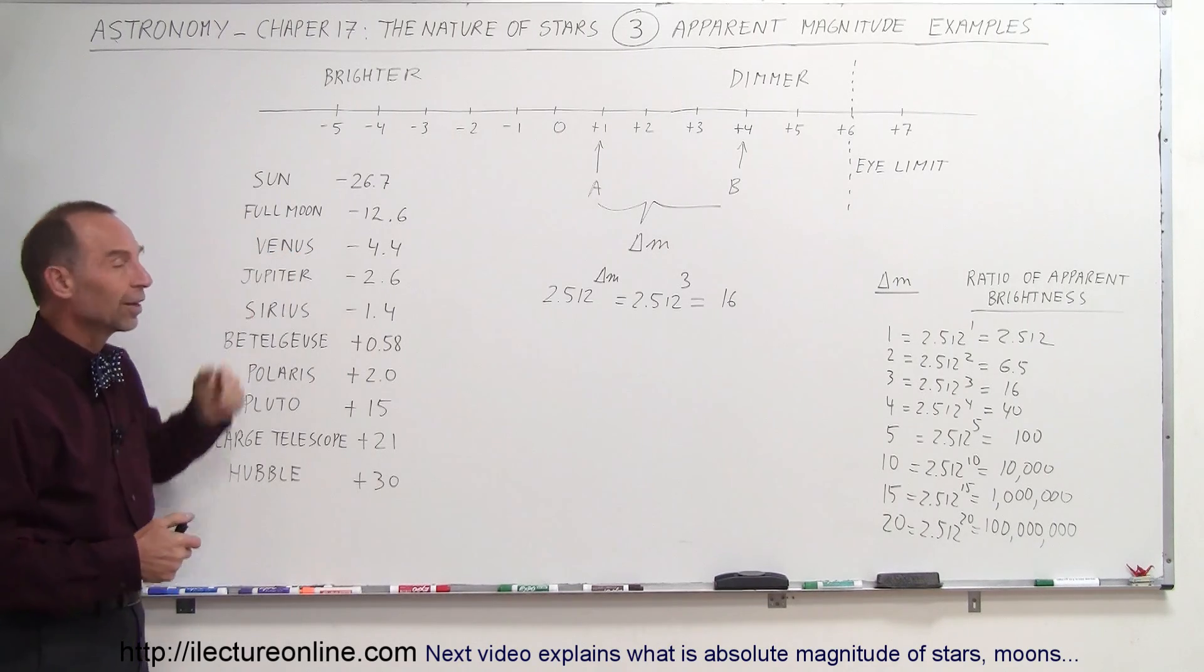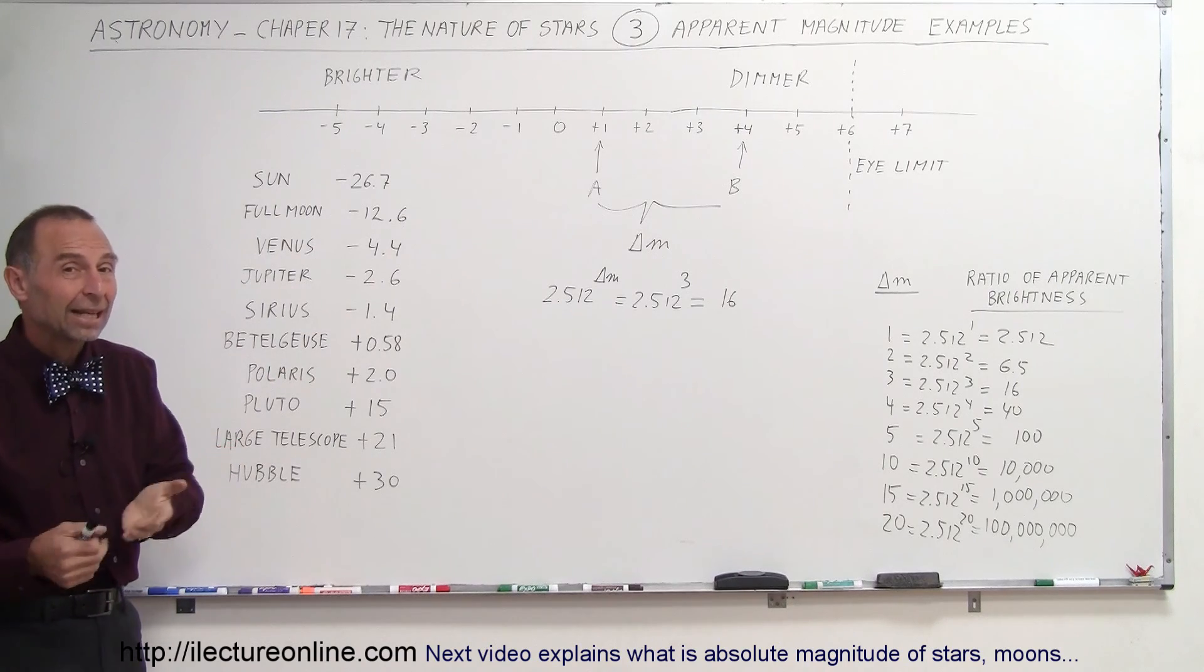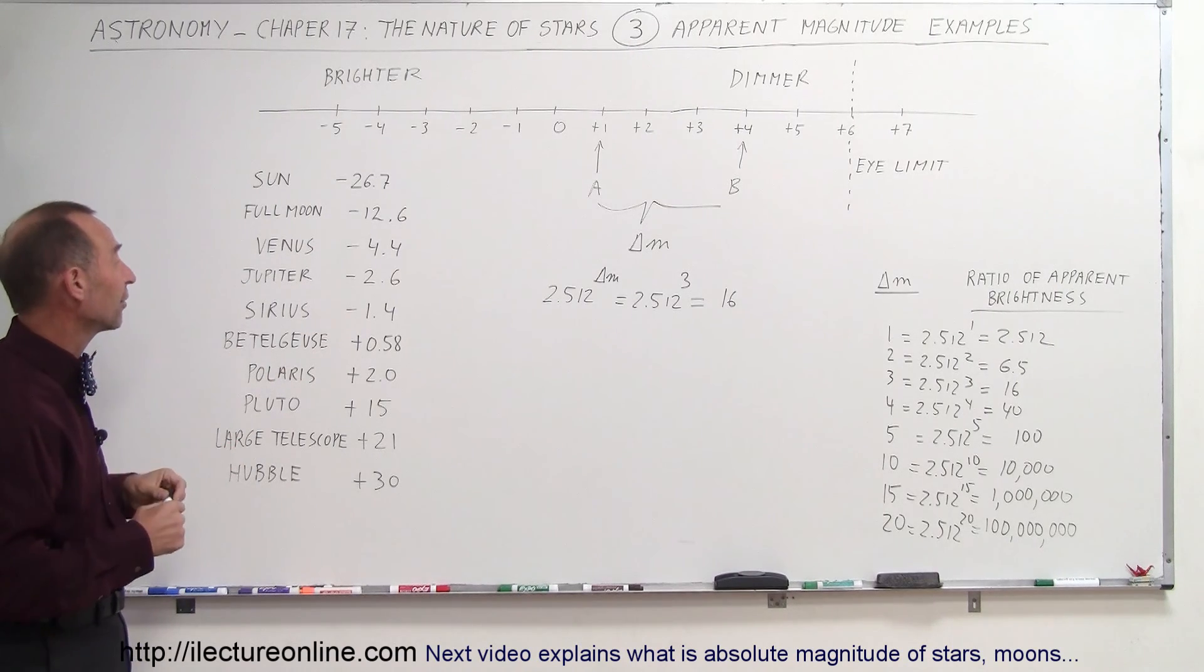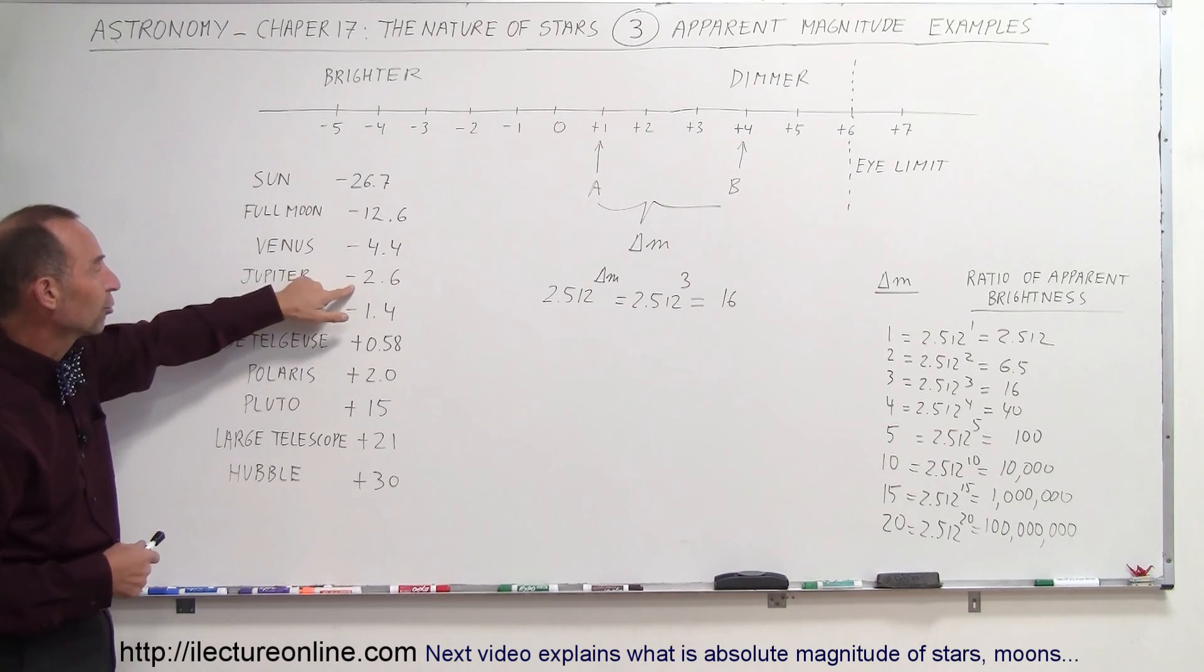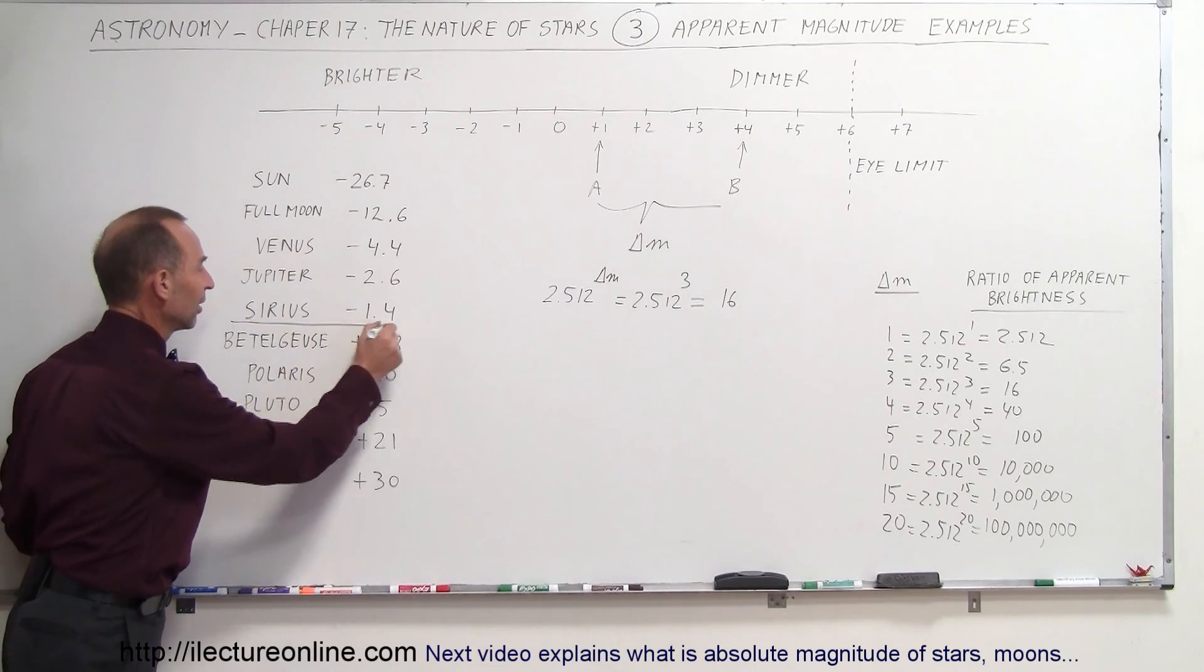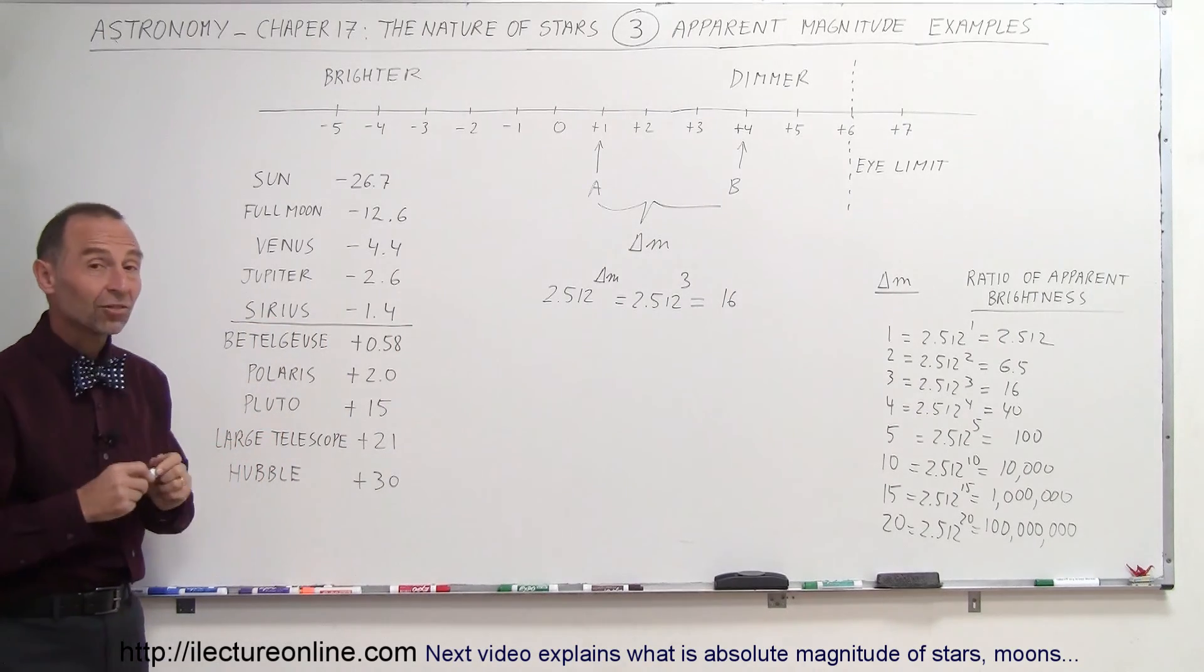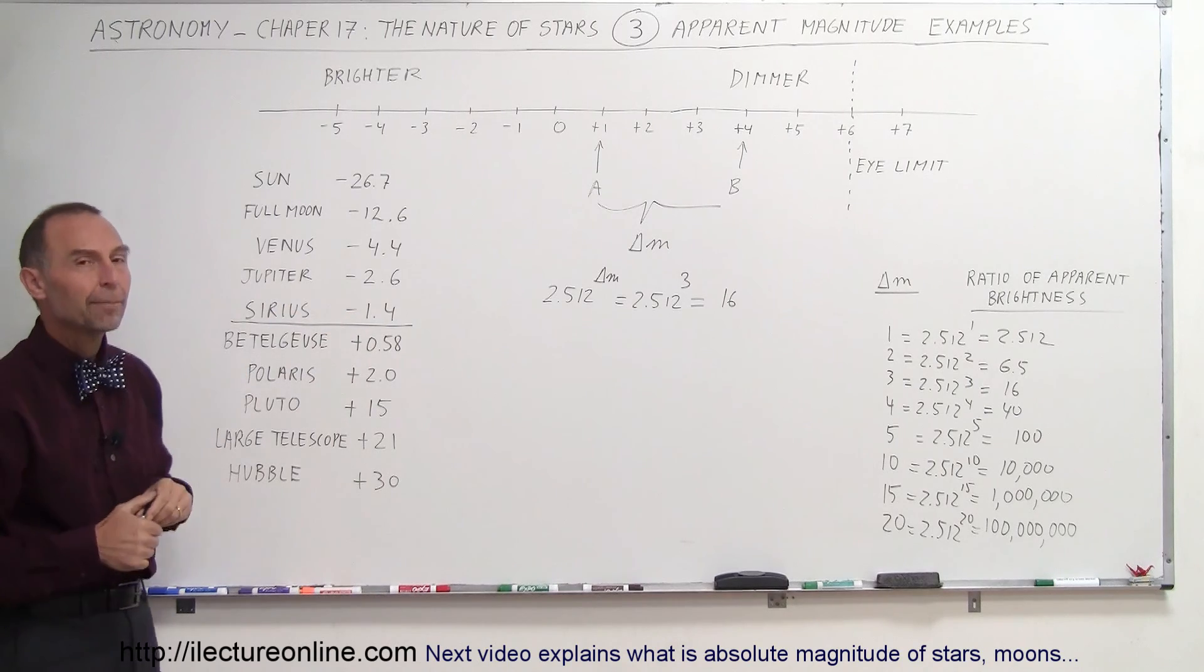Venus, besides the moon, is the brightest object in the sky at minus 4.4. It's the brightest planet and is much brighter than any star out there. Jupiter is also brighter than the brightest star at minus 2.6. The brightest star is Sirius, a star in the constellation Canis Major. It is minus 1.4 apparent magnitude.